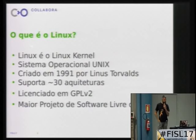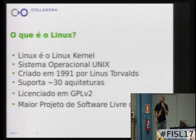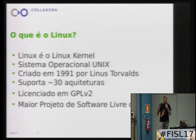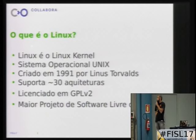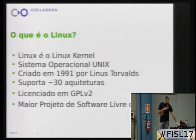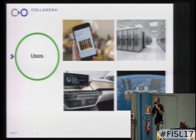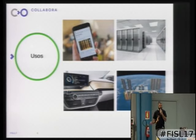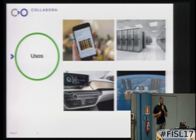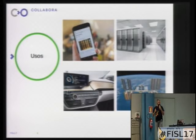Linux is a UNIX operating system. It was created by Linus Torvalds in 1991. Today it supports around 30 different architectures — ARM, Intel, PowerPC, and so on. It is strictly licensed under GPLv2. Many people believe it is the largest software project in the world, with the largest number of developers. It is used in various environments: mobile, servers, high-performance computing, storage, cloud, cars, refrigerators, home appliances, IoT, and even in the International Space Station.